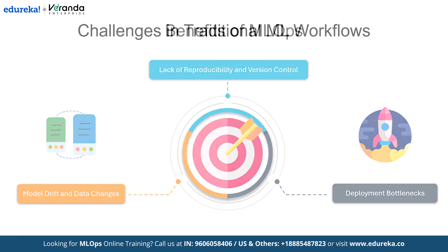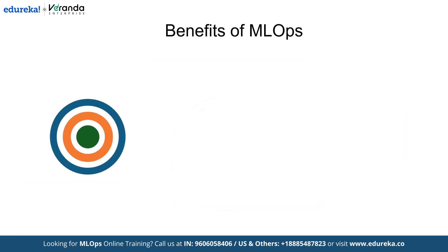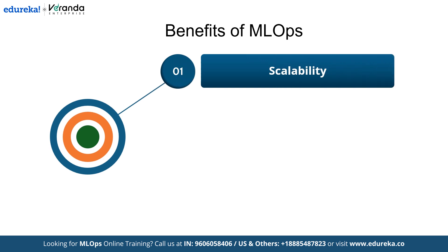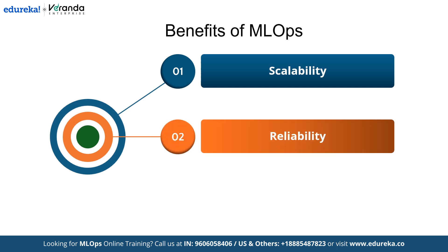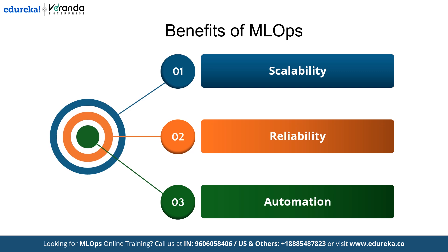Having identified the challenges, let's see how MLOps addresses them by looking at its benefits. MLOps brings several key benefits to machine learning systems, ensuring they are robust, efficient, and scalable. It facilitates scalability by enabling model deployment across diverse environments like cloud, edge, or on-premises systems with automated pipelines that efficiently manage large datasets and user demands. Reliability is enhanced through continuous monitoring, which detects issues such as data drift and concept drift early, ensuring consistent model performance. Automated workflows minimize human error. Moreover, MLOps streamlines repetitive tasks like data preprocessing, model training, and deployment through CI-CD pipelines and orchestration tools, freeing data scientists and engineers to focus on innovation and maximizing the value of AI investments.